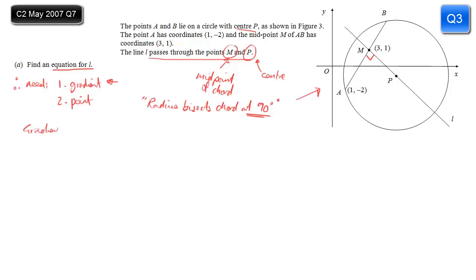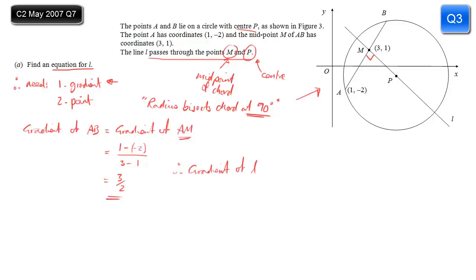For the gradient of AB, I don't have point B, but M also lies on that line, so I can use gradient AM instead. Using points (3, 1) and (1, minus 2): 1 minus minus 2 divided by 3 minus 1 gives 3 over 2. So the gradient of AB is 3 over 2. Since L is perpendicular to AB, the gradient of L is the negative reciprocal: minus 1 divided by 3 over 2, which equals minus 2 thirds.